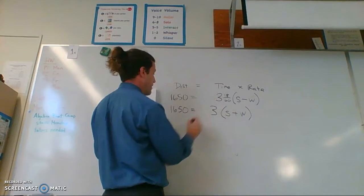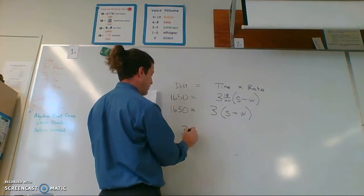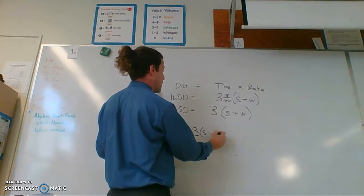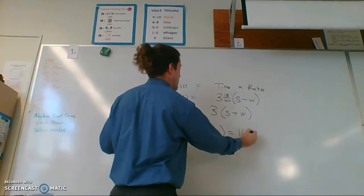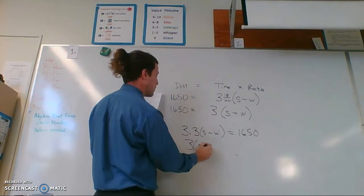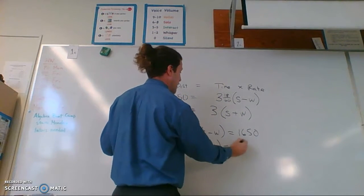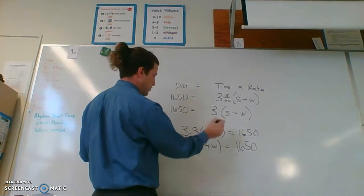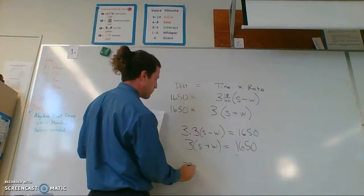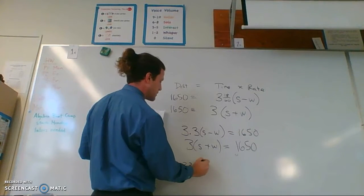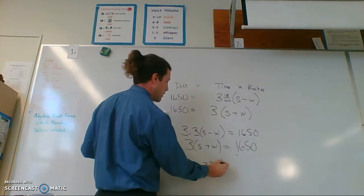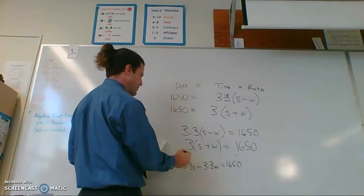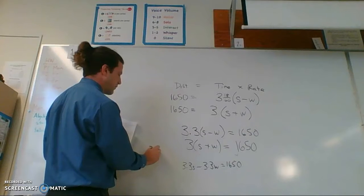I'm going to simplify that fraction into 3 tenths. So 3.3S minus W equals 1650, and 3S plus W equals 1650. I'm going to use elimination to solve, and first I'm going to distribute 3.3S minus 3.3W equals 1650, and this one's 3S plus 3W. I'm going to do an intermediate step over here.